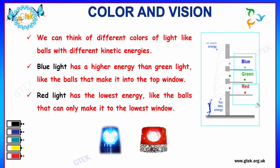So, blue light has a higher energy than green light, like balls that make it into the top window. Green light is considered to be the middle one, which you can see here in the window. And the red light has the lowest energy, like the balls that can make it to the lowest window. This is the color proportion in terms of energy.